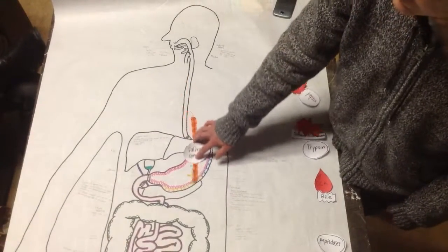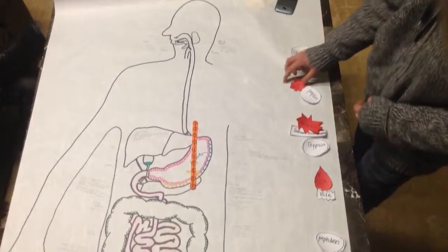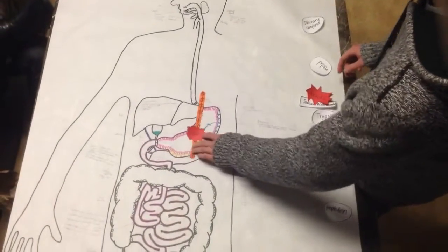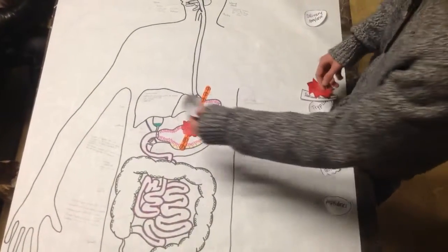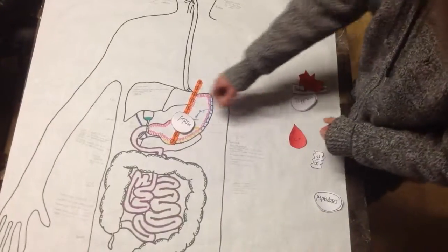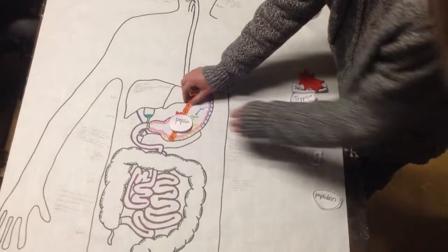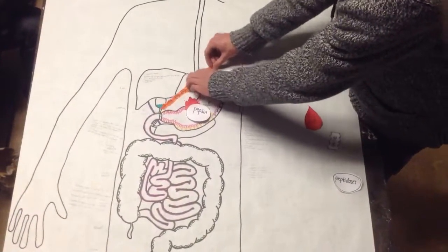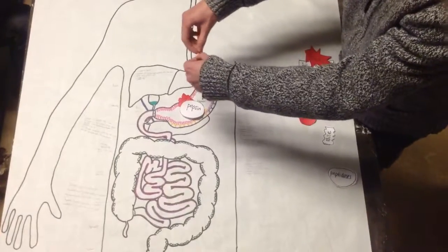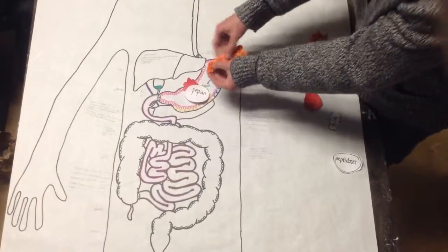And this gets put into the stomach which contains gastrin, which then really triggers the release of hydrochloric acid and pepsinogen to create pepsin. And what pepsin will do is take your polypeptide chain here and rip it in half into two smaller polypeptide chains.